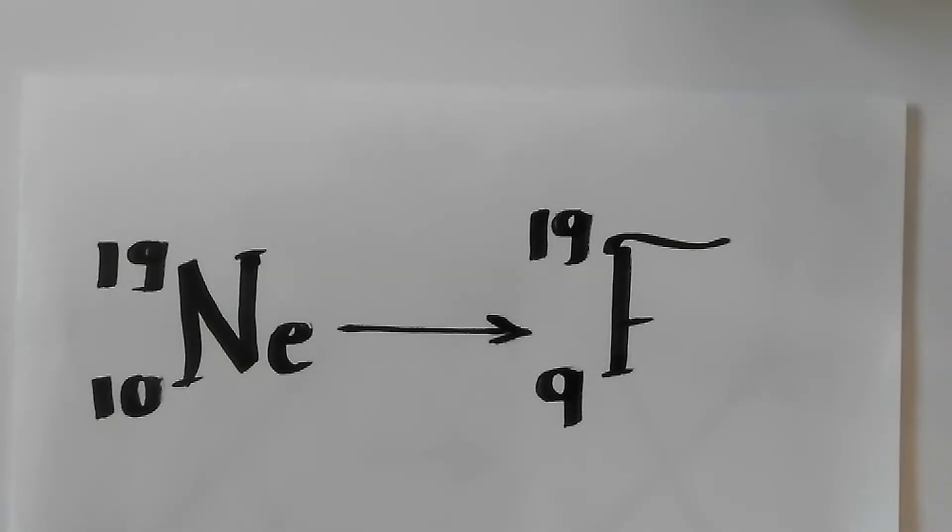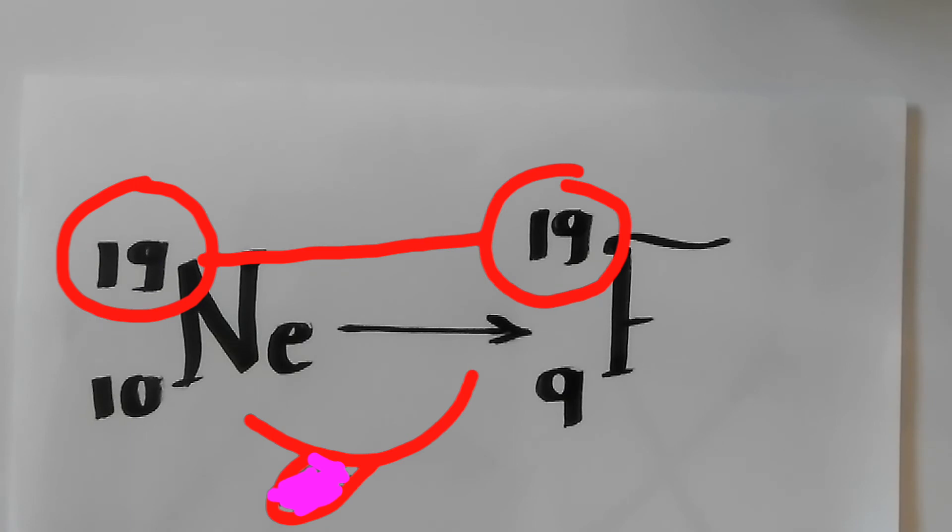In the question, Neon with atomic number 10 gets converted to fluorine with atomic number 9. The atomic mass number remains as it is.